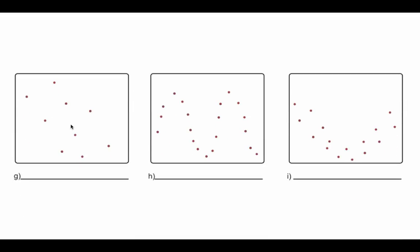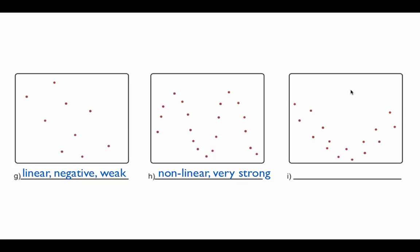Looking at the remaining graphs: one slopes down with a wide, scattered cloud — linear, negative, and weak. Another replicates a sine or cosine curve — that's very periodic and nonlinear, but would be a very strong nonlinear correlation. The last one decreases then increases, creating a hook shape with a tight oval — moderate to strong, but nonlinear. We're attaching descriptions right now without mathematical equivalents, but we're going to teach you how to do that precisely.